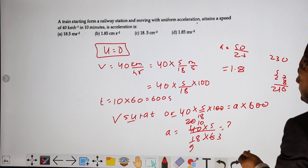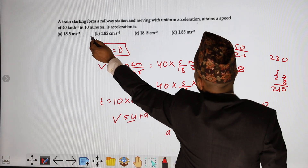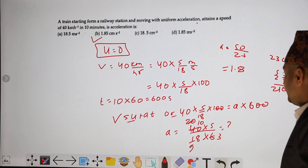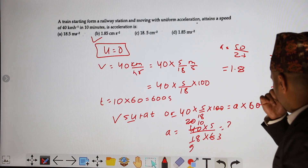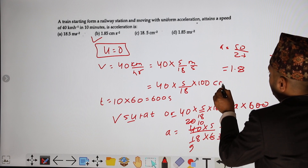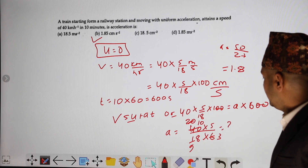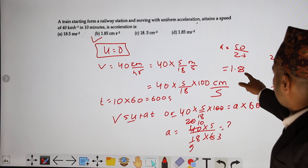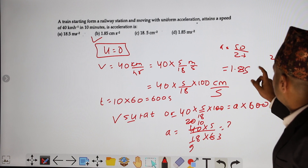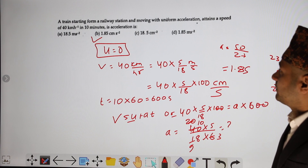So the acceleration is 1.85 cm per second squared. We have to work with centimeter, so we multiply 100 to convert to centimeter per second. The answer is 1.85 cm per second squared.